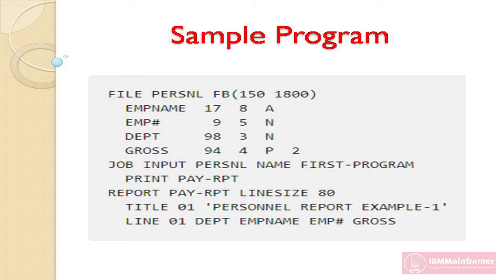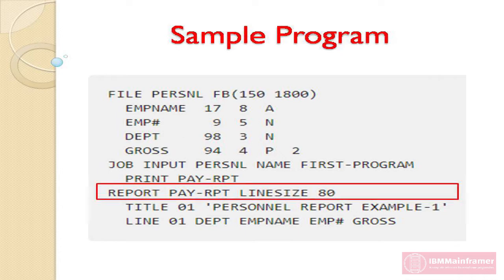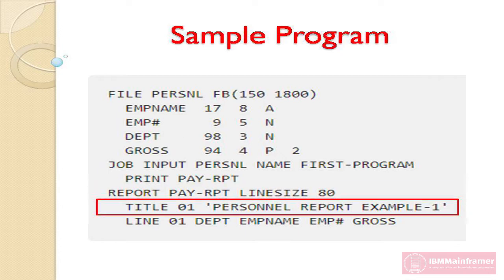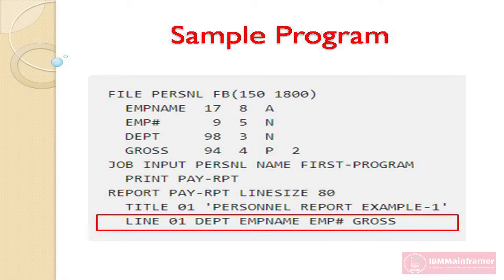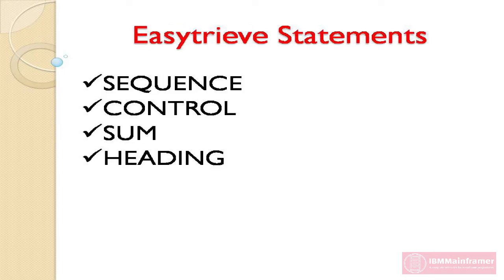This is the sample program that we have been discussing. It currently has only three statements in its report declaration: Report, Title, and Line. In this chapter, we introduce the following statements and add them to our sample program: Sequence, Control, Sum, and Heading.